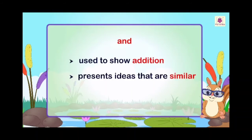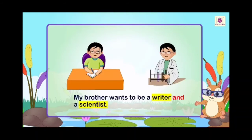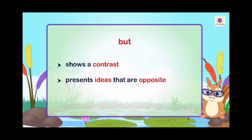'And' presents ideas that are similar — suppose you are both talking about the same thing, so we add 'and.' For example: 'My brother wants to be a writer and a scientist.' He wants to be both a writer and a scientist. Next is 'but.' 'But' shows a contrast, meaning a difference.